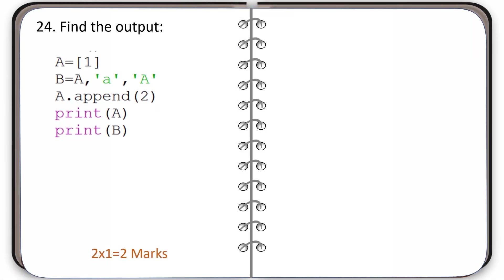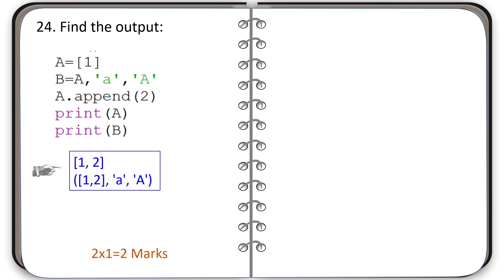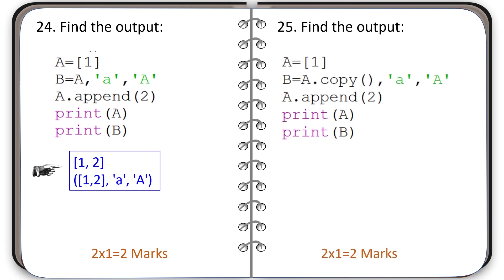Question number 24: find the output. The output is shown. Question number 25: see the given code and find the output. This is the correct output.